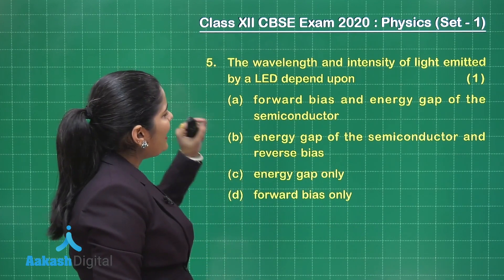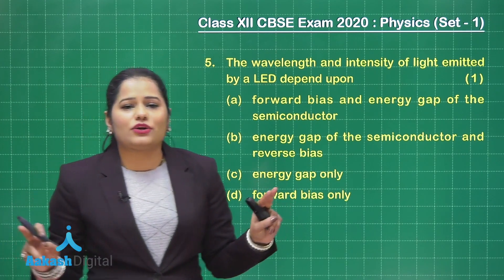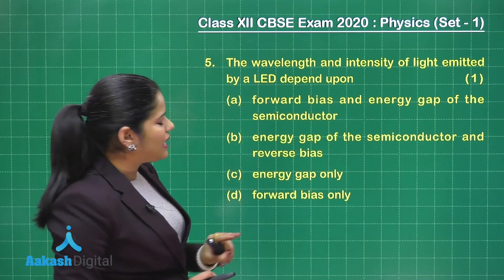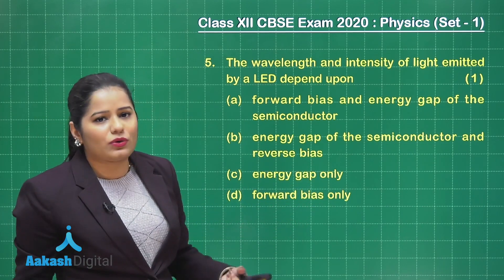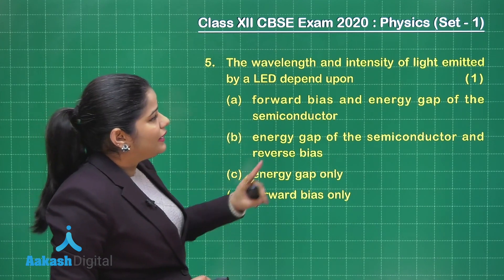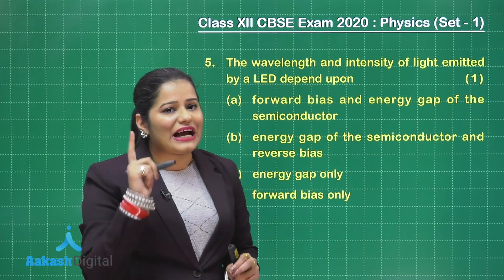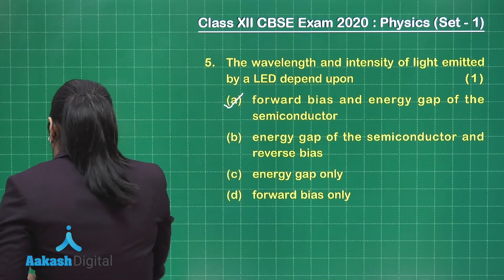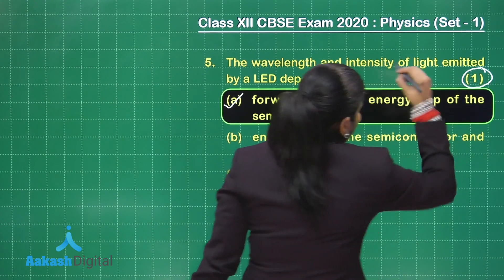The next question says the wavelength and intensity of light emitted by an LED depends on — it depends on the energy gap of the semiconductor. Option A says forward bias and energy gap of the semiconductor, option B mentions reverse bias, option C says energy gap only, and option D does not mention the energy gap at all. The correct option is A, which earns one mark.